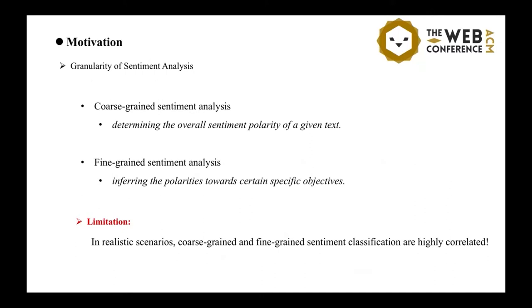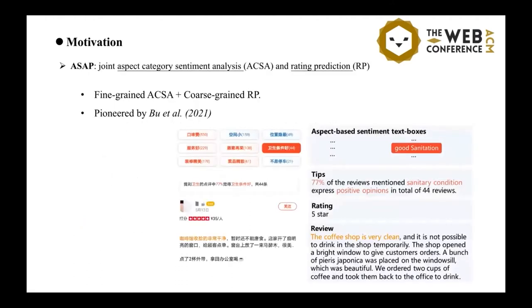Here is a problem. In most of the existing work of sentiment analysis, both two types of granularity are highly correlated but most of them just perform the analysis in isolation. So in recent work, Bu proposed a new task of ASAP, joint aspect category sentiment analysis and rating prediction.